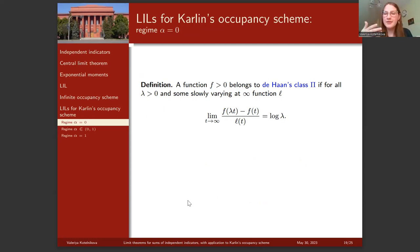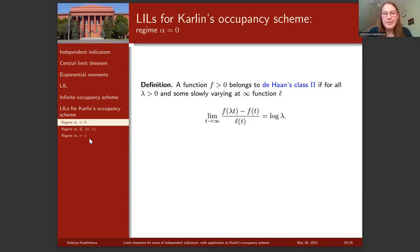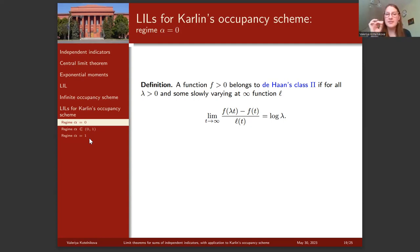Karlin first revealed that the scheme has different properties when α = 0, when α ∈ (0,1), and when α = 1. Our law of iterated logarithm also differs across regimes. Unfortunately we did not manage to cover all cases when α = 0; we prove it for a subclass called the de Haan class. A function belongs to the de Haan class if for all positive λ and some slowly varying function l, a certain limit relation holds — for example, the logarithm function belongs to this class.